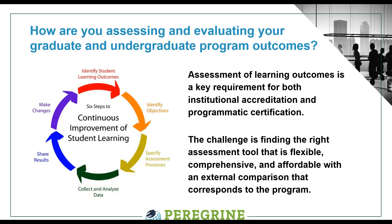We want to talk about how you are assessing and evaluating your programmatic learning outcomes. Here's a little infographic describing continuous improvement of student learning. You first start with putting your learning objectives and outcomes, then you find an assessment tool to measure those. Once you collect and analyze your data, you draw out lessons learned and what changes you need to implement. Once you implement those changes, you want to see if they had the intended impact — that's the whole continuous improvement cycle, closing the loop.